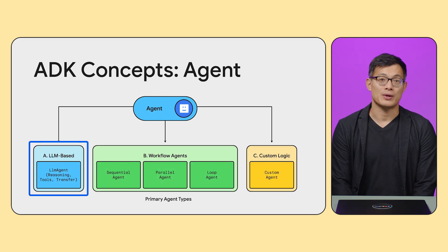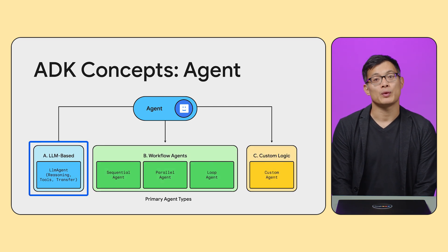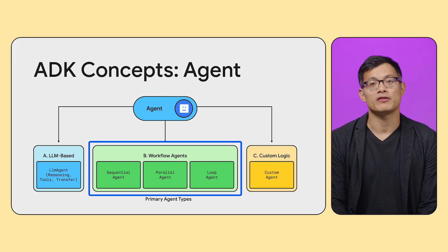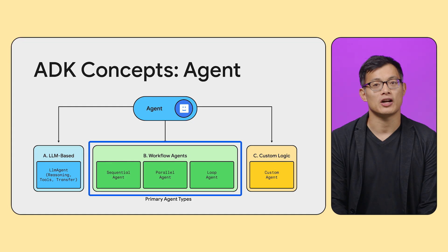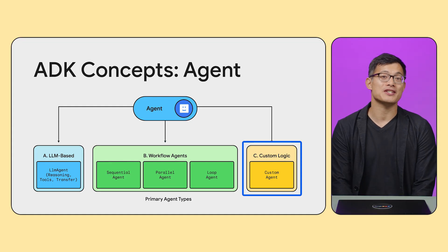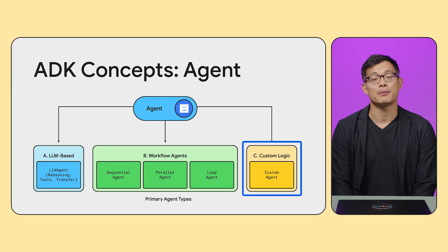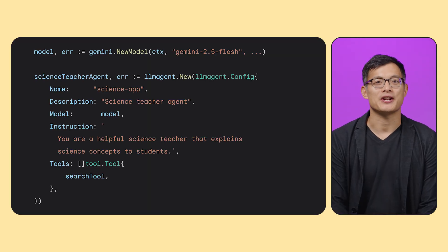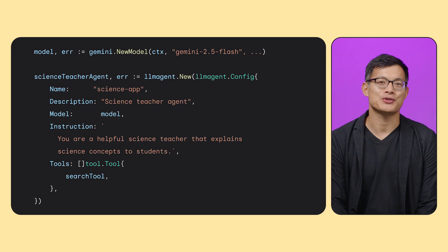LLM-based reasoning agents decide which tools to call or which agents to transfer to. Then there are workflow agents for more prescriptive and deterministic logic flows. Finally, you can also build custom agents where you can write arbitrary logic, like combining both the LLM and workflow agents.